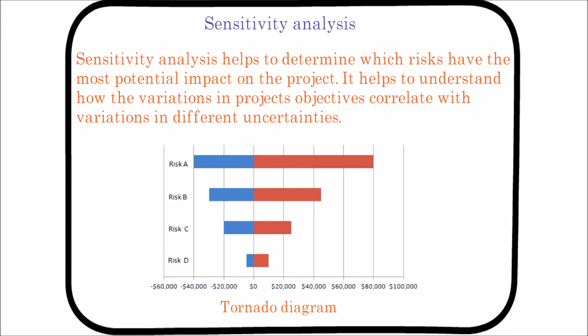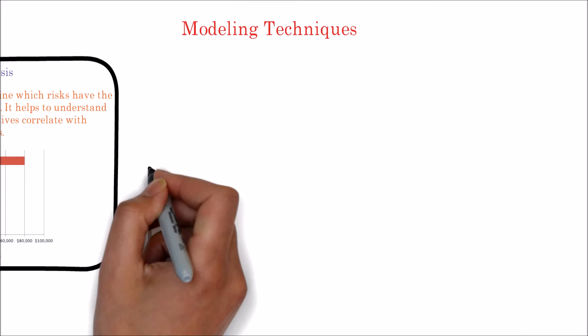A tornado diagram is a special type of bar chart used in sensitivity analysis for comparing the relative importance of the variables. In a tornado diagram, the y-axis contains each type of uncertainty at base values, and the x-axis contains the spread or correlation of the uncertainty to the studied output.